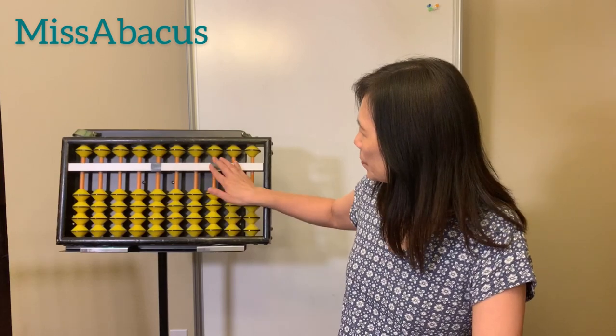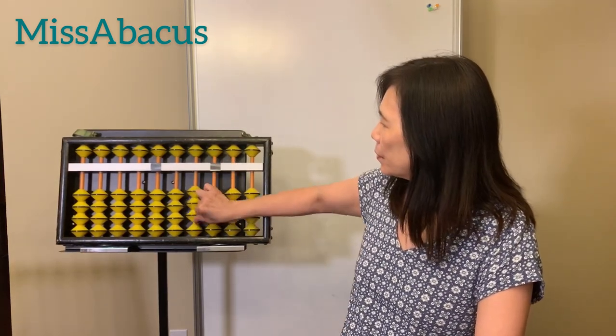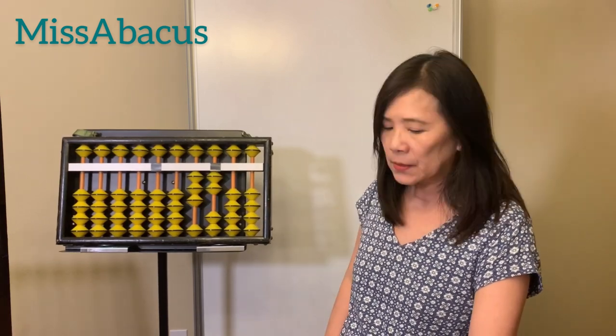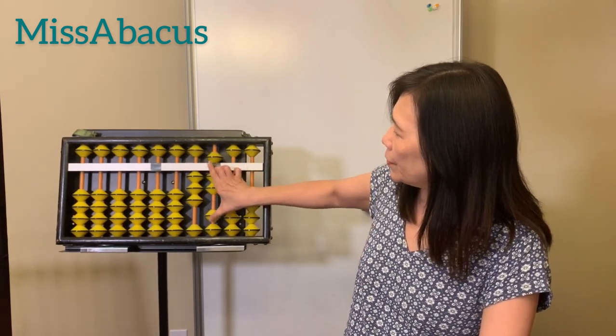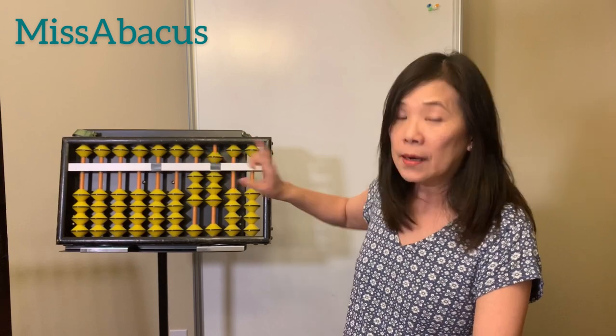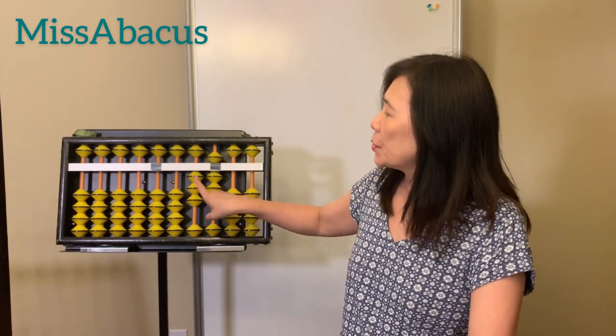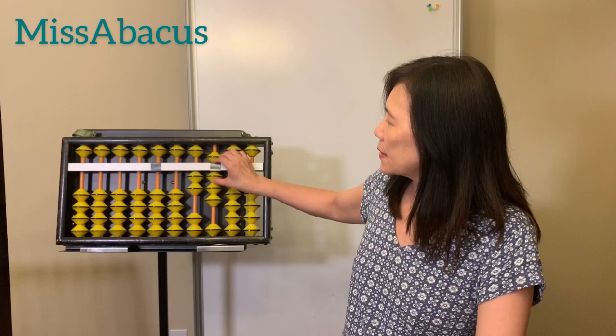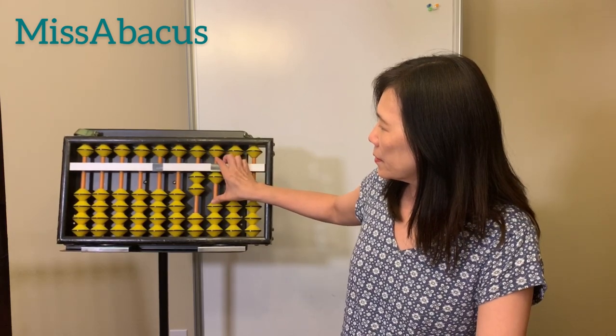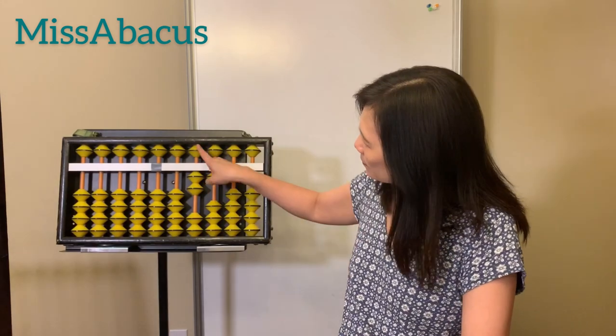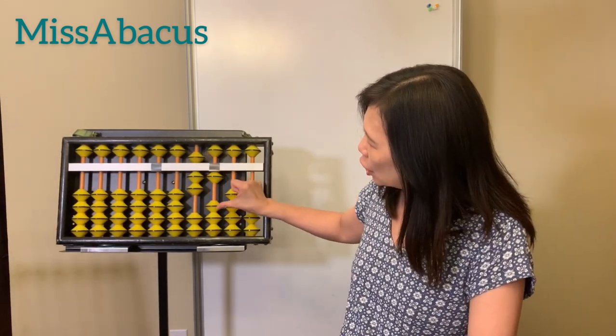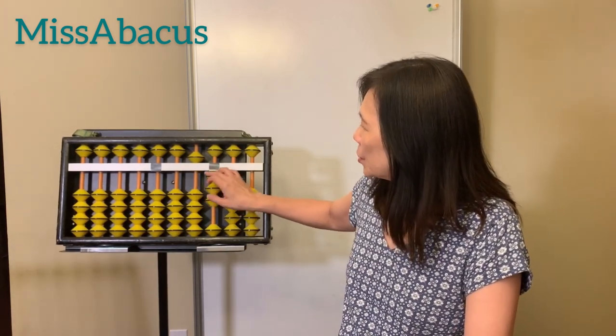Let's do problem 21: 32 — one two three, so 32. Plus six, both fingers. Take away 17 — take away one, seven both fingers. Plus 52 — five and two bits up. Answer is 73.